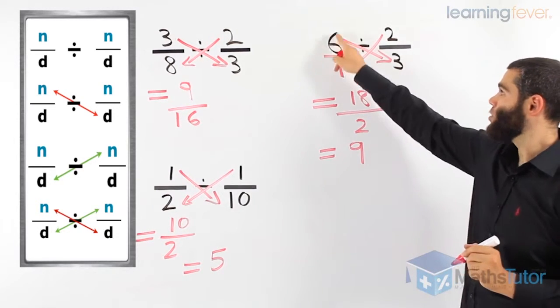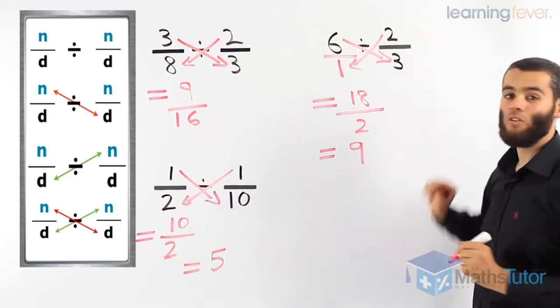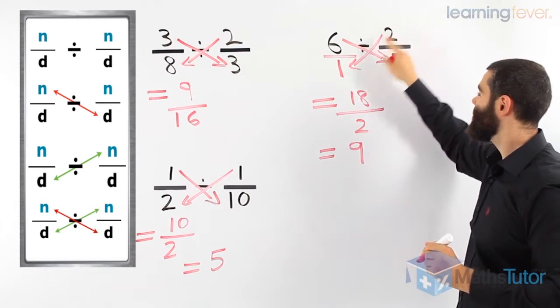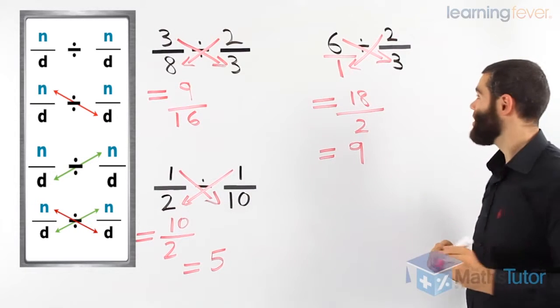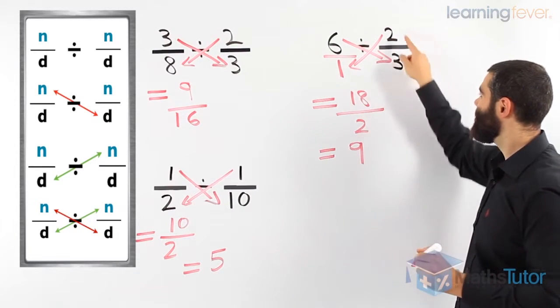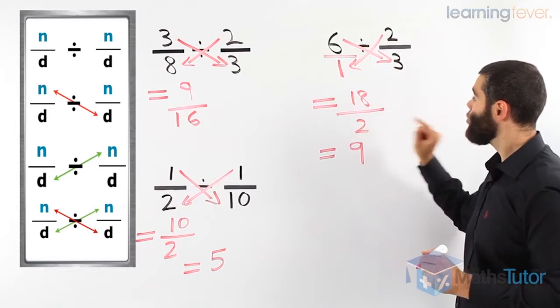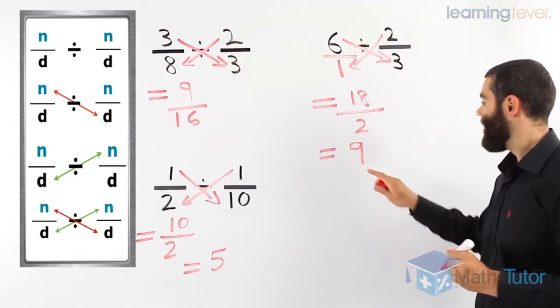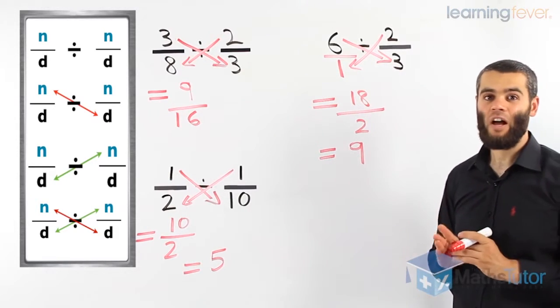So cross-multiply, first numerator with second denominator, and then the second numerator with the first denominator. 6 times 3 is 18, 2 times 1 is 2, 18 divided by 2, our final answer is 9.